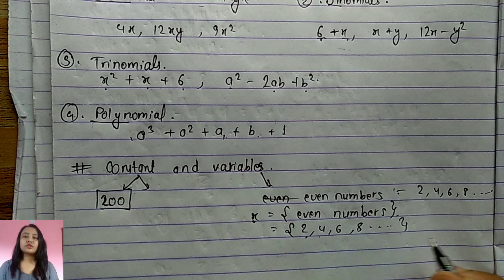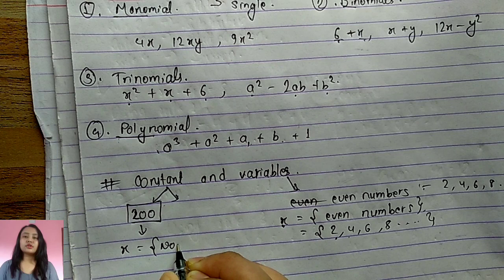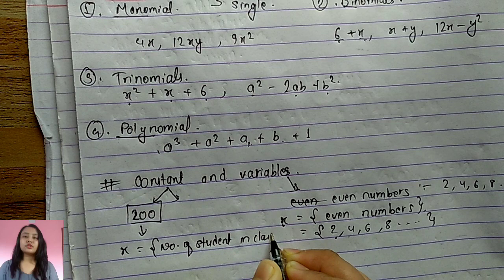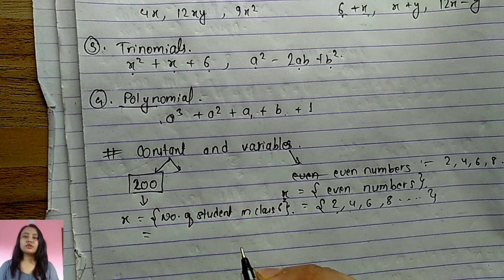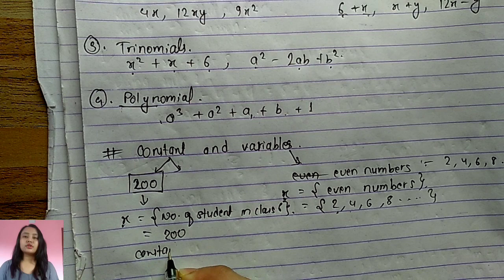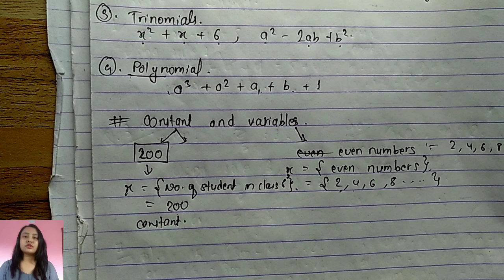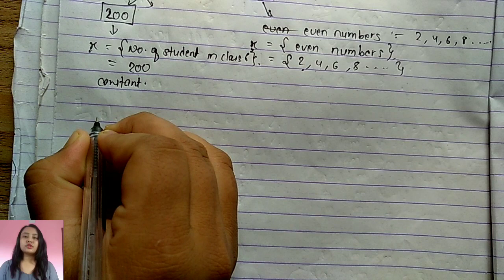For example, if x equals the number of students in class six at LFS, then x has a fixed value of 200 — so it is a constant. Now that we understand the difference between constants and variables, let's talk about coefficient, base, and power.